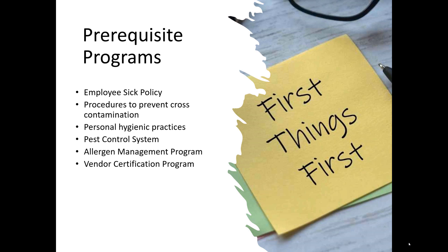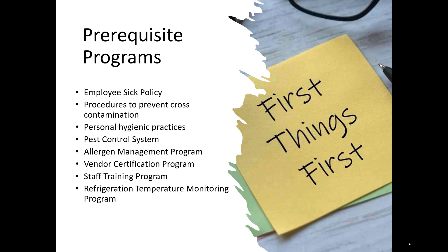A vendor certification program ensures you're getting good quality ingredients in, so you need a strong vendor certification program in place. You also need a training program that includes training on food safety and food hazards. If you store your food — for example, if you're a food manufacturer producing juices — when they are finished and prior to shipping to the customer, they need to be stored under refrigerated conditions. You need to monitor those refrigerators to ensure temperatures are being maintained at the correct level, so you should have a refrigeration temperature monitoring program in place.